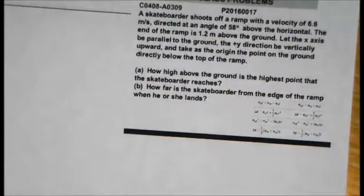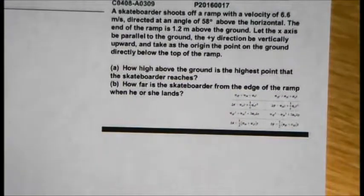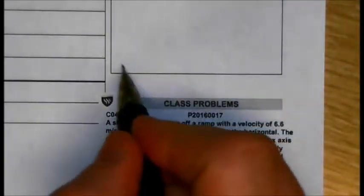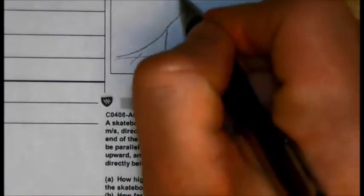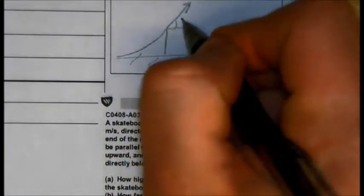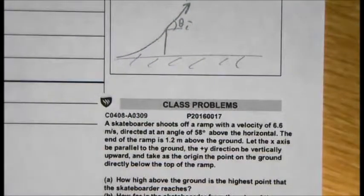You've got a skateboarder that shoots off a ramp with some velocity directed at an angle. I'm going to sketch this up above. So there's the ramp, shoots off with some initial velocity at some angle theta initial.